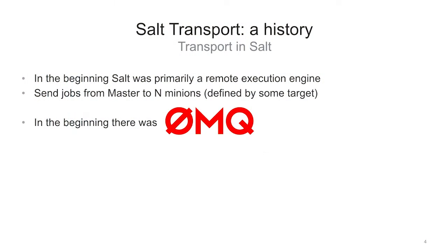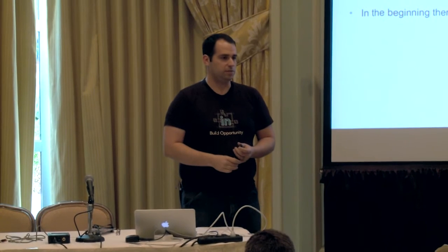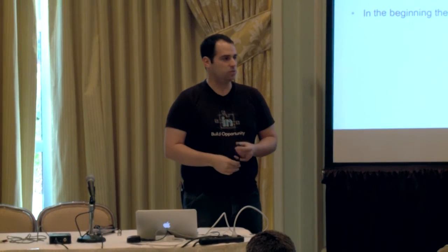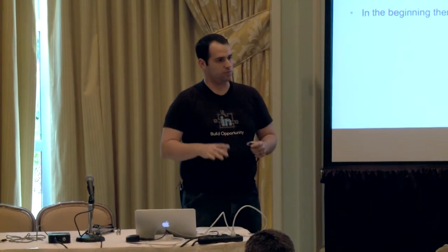To start with the transport stuff, we have to go back in time for a history lesson. Back in the beginning of Salt, it was basically just a remote execution engine — back in the 06, 07 days. The state system didn't exist. The reactors didn't exist.